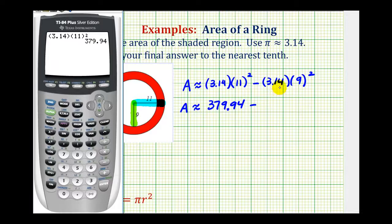And then for the area of the small circle, we'd have 3.14 times nine squared. So it's going to be 254.34 square units.